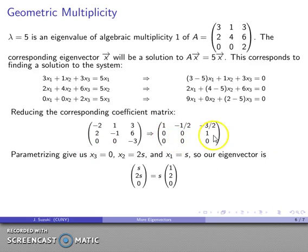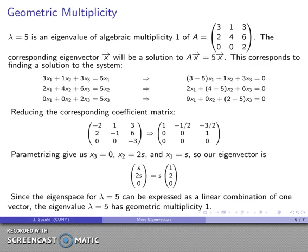x3 is 0, that's what I actually get from this third row. x2 is going to be my parameter, and x1 is going to also give me that value. And so I get this parameterization of all of my eigenvectors. And there's only one eigenvector, so our eigenspace has geometric multiplicity 1.